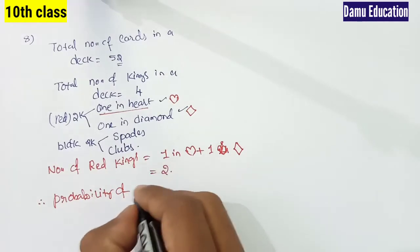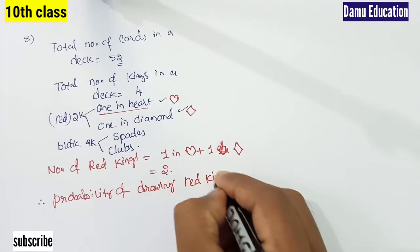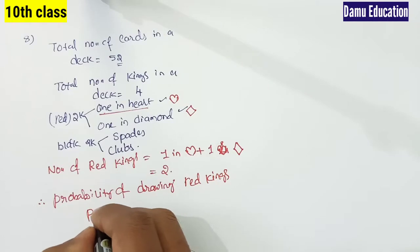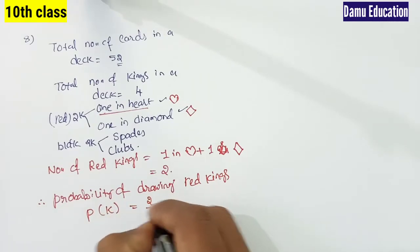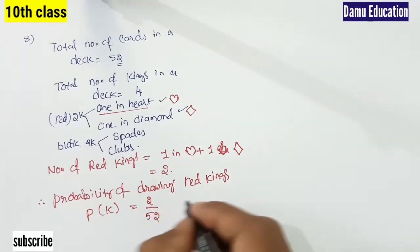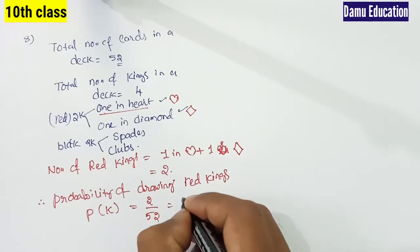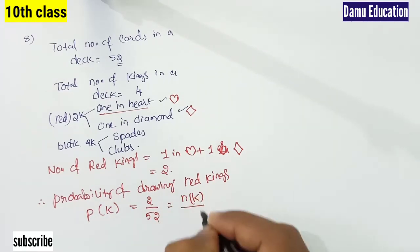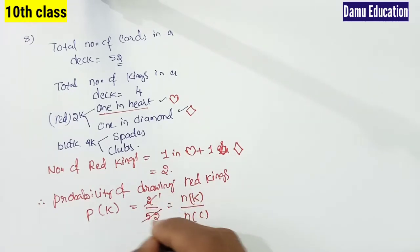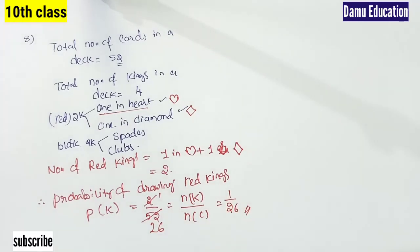Therefore, the probability of drawing red kings P(K) = number of red kings / total number of cards = 2/52. Simplifying: 1/26. So the probability of getting red kings is 1/26.